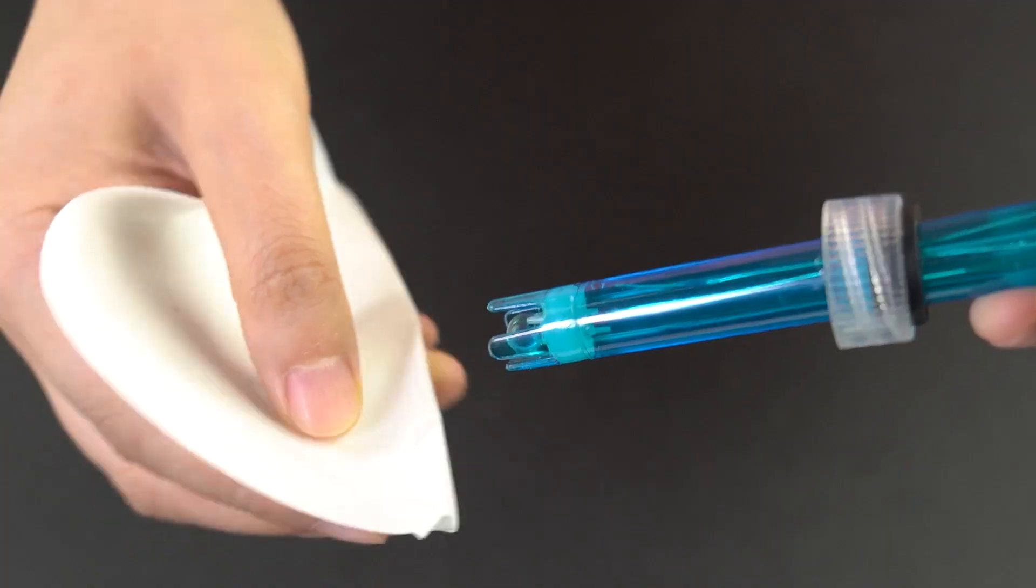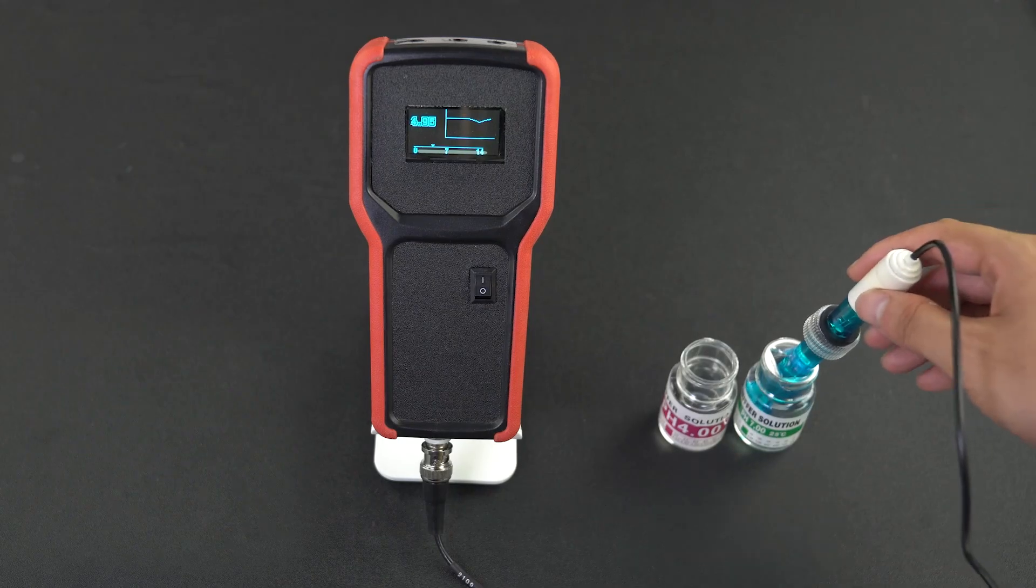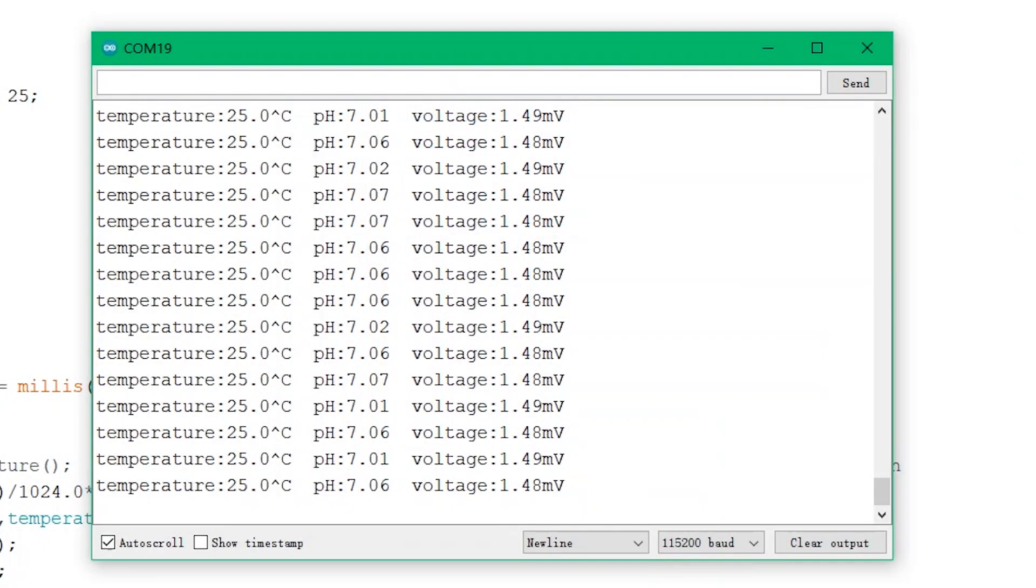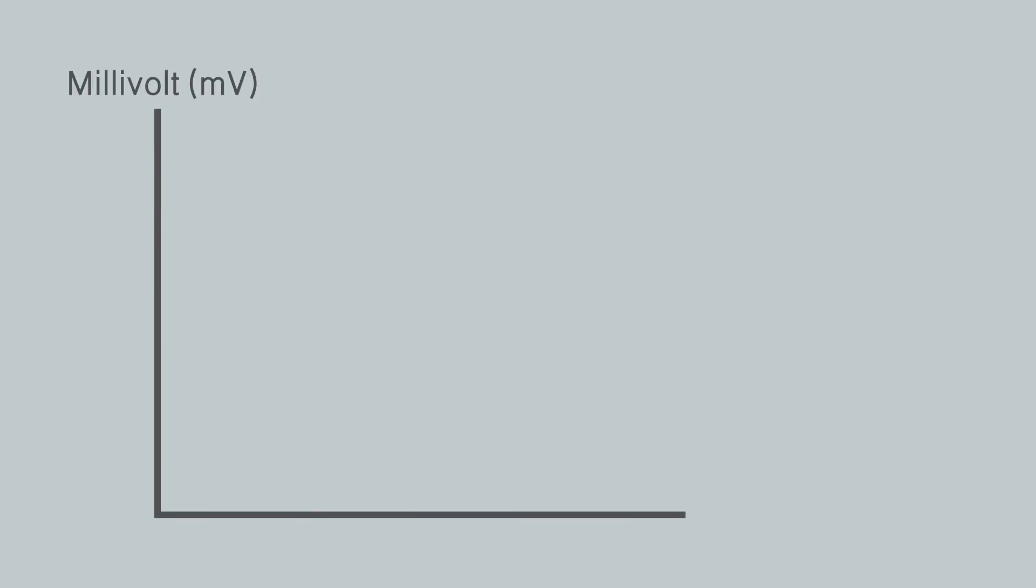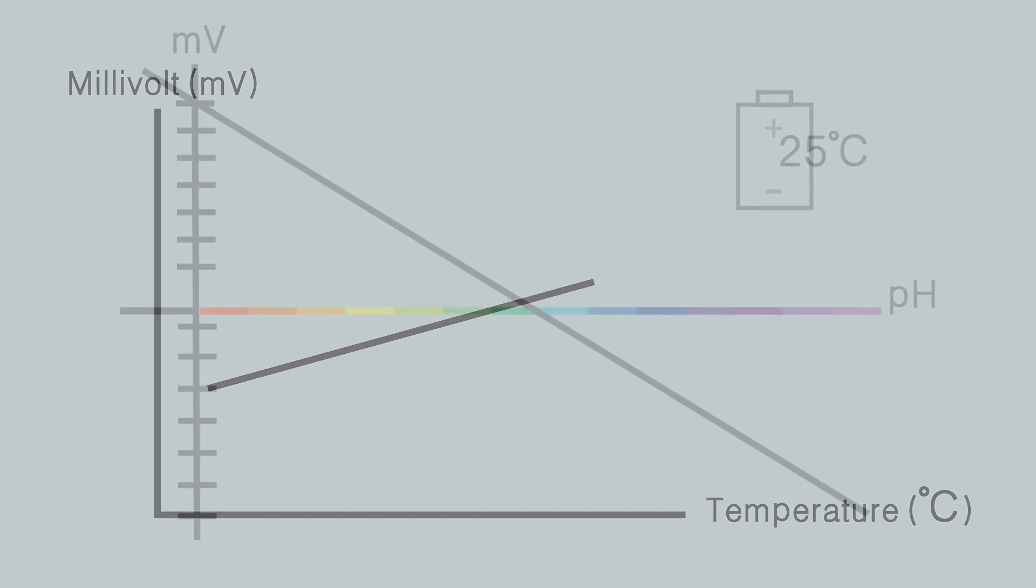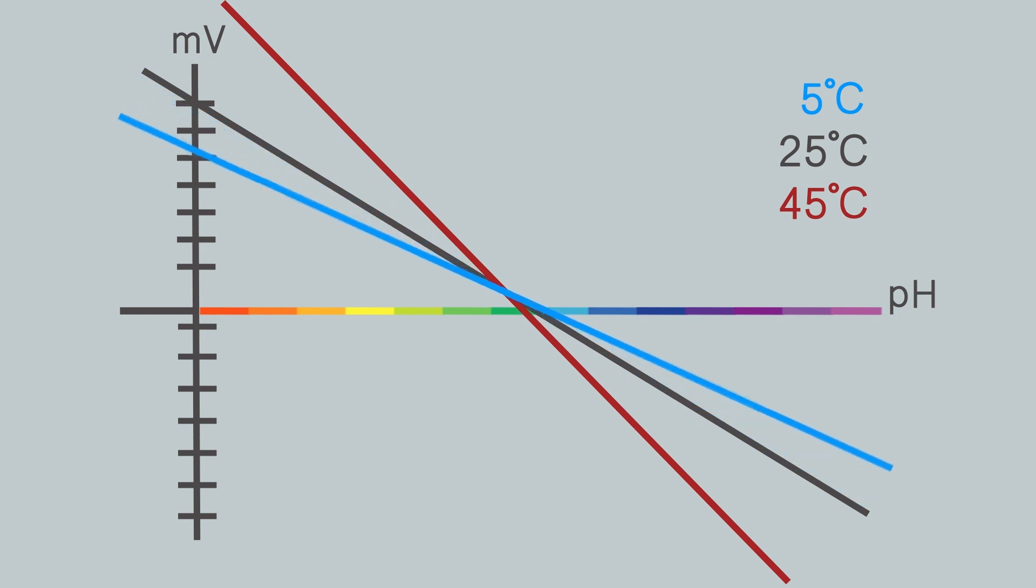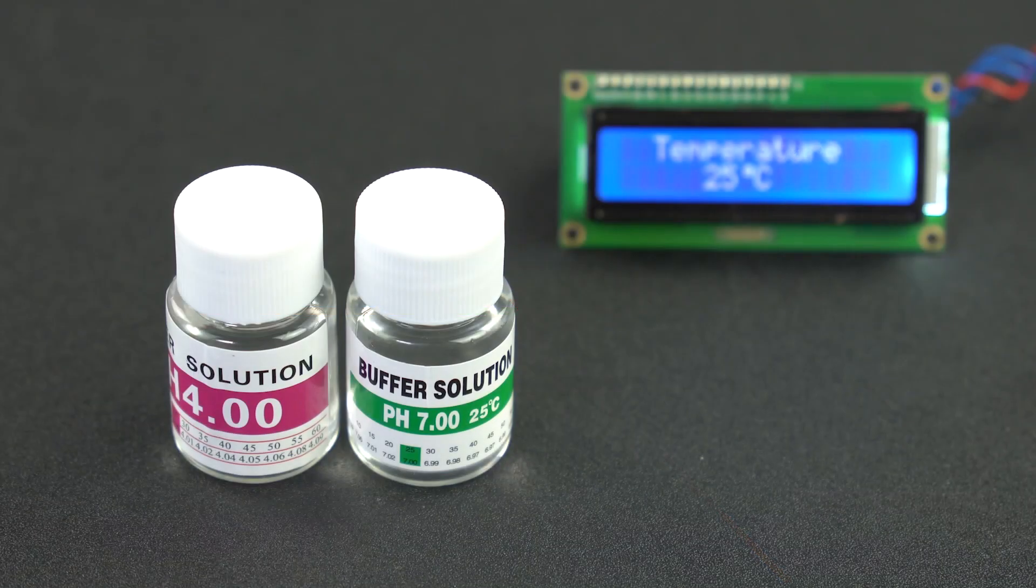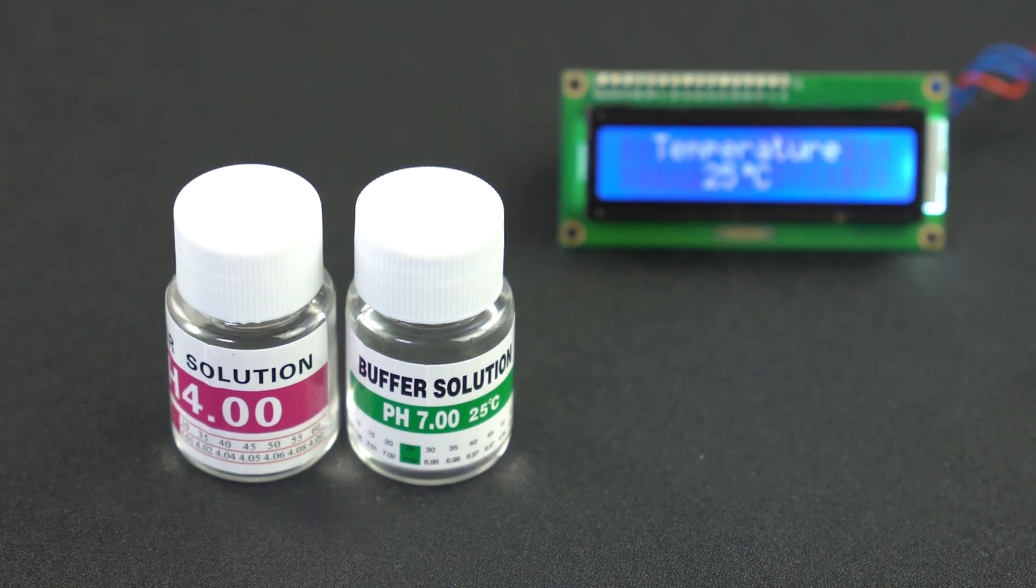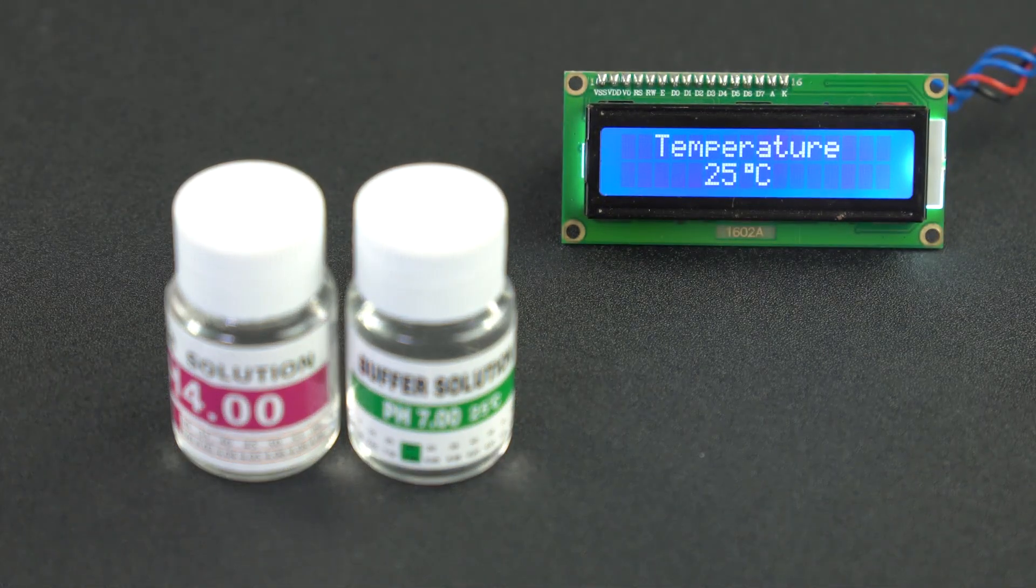Besides, temperature also affects pH measurements. The readings above are all obtained at 25 degrees Celsius. As we all know about batteries, the higher the temperature, the higher the voltage. Conversely, if the temperature is low, the voltage output is not as high as expected. Since temperature will affect the slope of the pH calibration curve, its impact on pH reading should be taken into account if the measurements are done at different ambient temperatures. It is best to use standard solutions with the same temperature as the solutions to be tested during calibration.